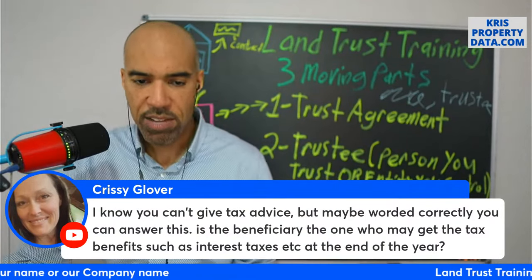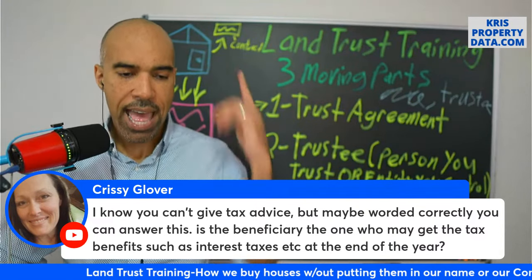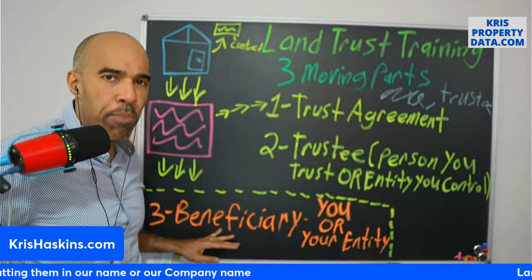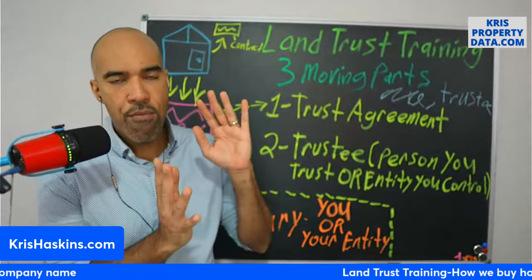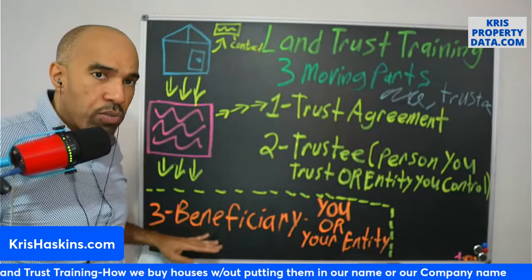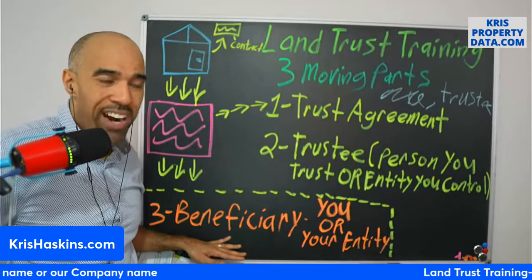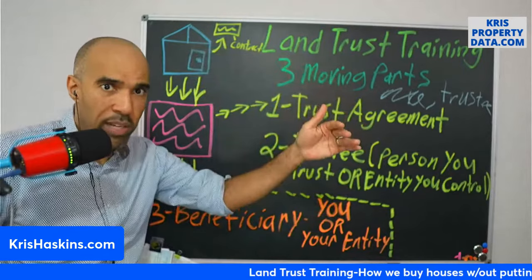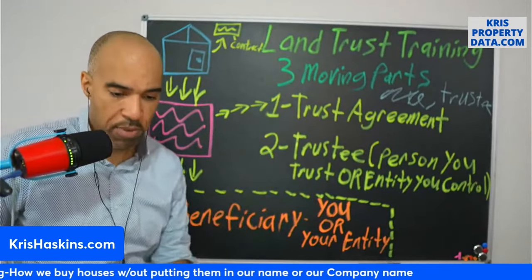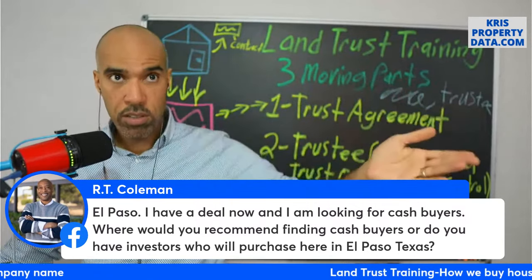Question from Chrissy: I know you can't give tax advice, but is the beneficiary the one who gets the tax benefits such as interest, taxes, et cetera? Absolutely — great point. The beneficiary is the one that has all the tax burden. A land trust is nothing but a flow-through or pass-through entity. All the real estate taxes, all expenses, all income go through to the beneficiary. When you file your taxes, you don't have to put another page — it just goes on Schedule E as real estate owned. And the beneficiary can claim the mortgage interest too.